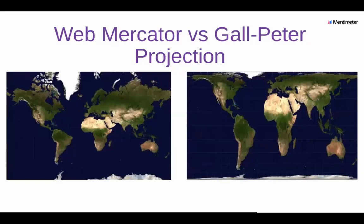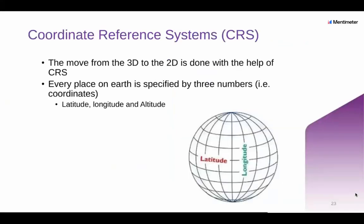An example of the Web Mercator projection would be the WGS84. If you're familiar with spatial data and GIS, you know this is a very popular map projection, and one we'll be using tomorrow. Now we can move on to look at our coordinate reference systems — how do we actually move from the 3D to the 2D? This is where our CRS, or coordinate reference systems, come in handy.